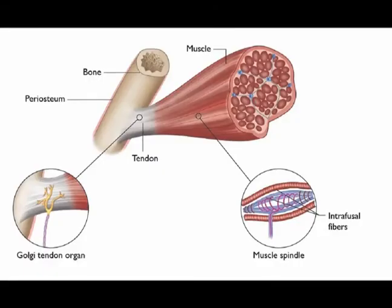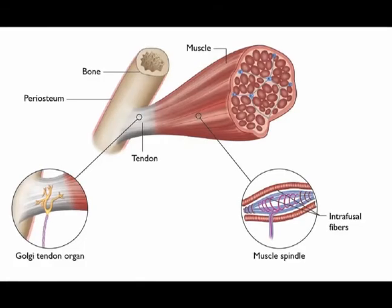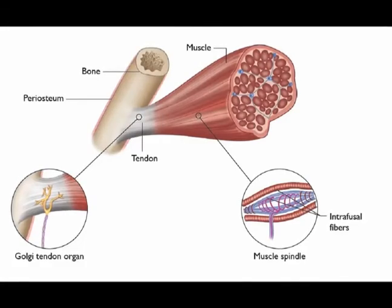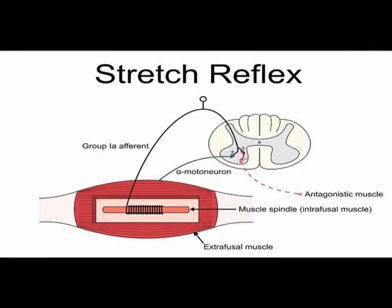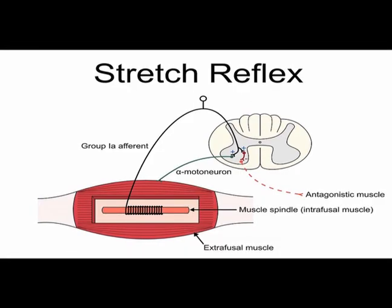In contrast to the Golgi tendon organs, which are relatively insensate to passive changes in length but respond to an increase in muscle force, muscle spindles respond to a stretch of a muscle.